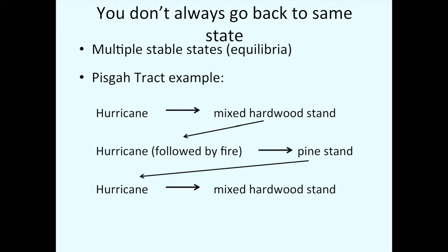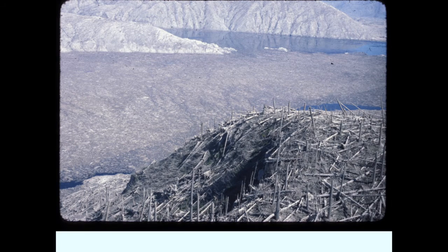Then there was another hurricane in 1938, and this time there was no hot fire because fire suppression was in place, and it became a mixed hardwood stand. Now, the mixed hardwood stand, the pine stand — they were all perfectly natural, long-lived and stable. They lasted to the next catastrophic disturbance of 100 years. The pine stand could have lasted 200 years if given the opportunity. So which one is natural? They're all natural, and they're all very different — and we're not even getting into the climate issues I was talking about yesterday.